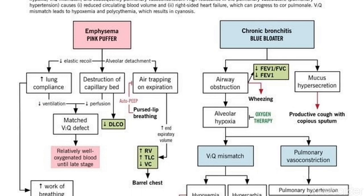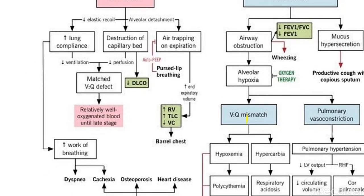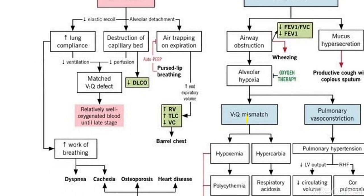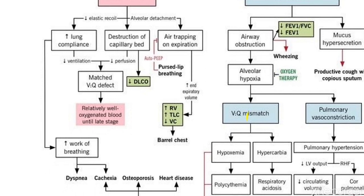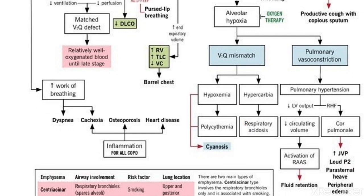Increased residual volume and total lung capacity lead to a barrel chest because the lungs are hyperinflated. The matched VQ defect causes relatively well-oxygenated blood until the late stage — that is why these patients are called pink puffers, because there is no significant VQ mismatch hypoxemia. Increased lung compliance increases the work of breathing. That is why in COPD emphysema patients there is dyspnea, cachexia, osteoporosis, and heart disease due to systemic inflammation.